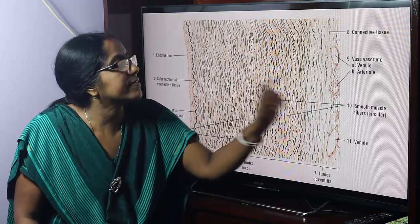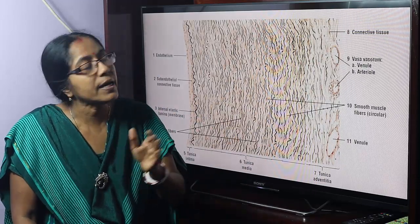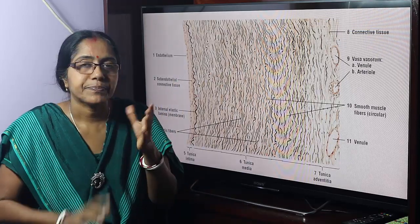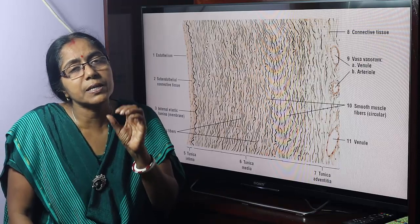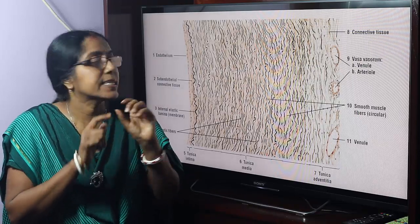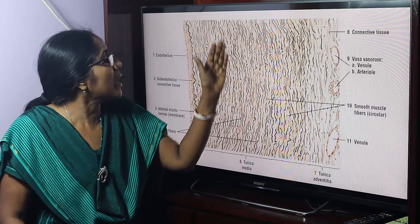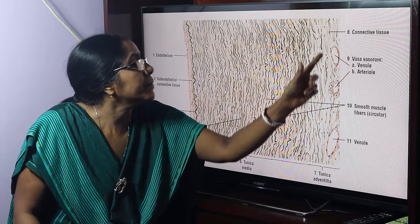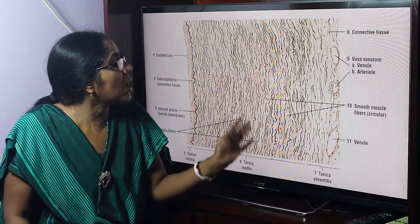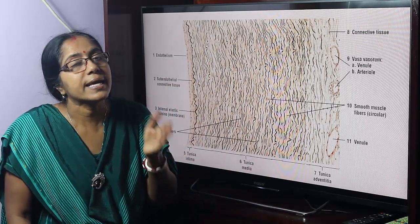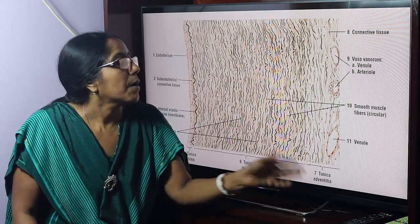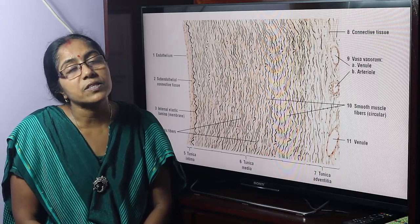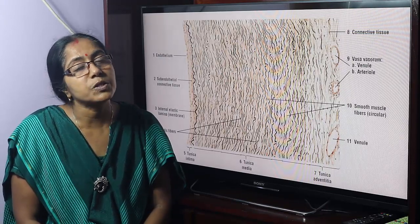The vessels supply the vessels. The inner portion of the tunica media and the tunica intima are nourished via the lumen. But tunica adventitia and the outer portion of the tunica media are nourished by the vasa vasorum. This is all about the microscopic structure of the large artery.